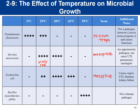Lastly, Bacillus stearothermophilus only grew at 55°C, making it a thermophile. Like psychrotrophs, thermophiles are generally not pathogenic because they don't grow at human body temperature. Bacillus stearothermophilus does not cause disease.